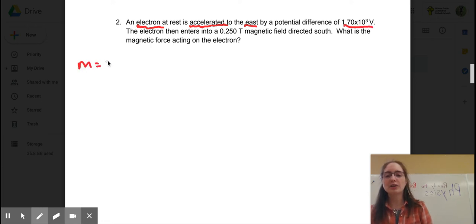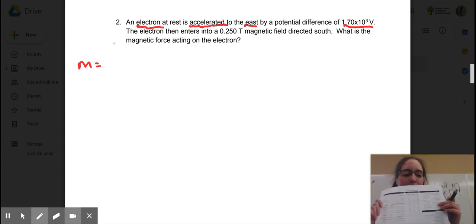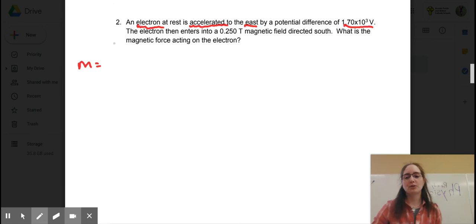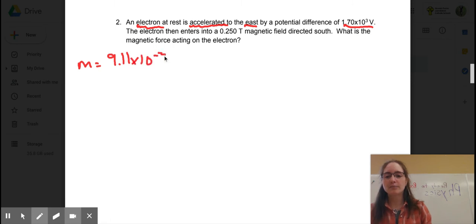All right. So now with an electron that automatically tells us off your data sheet, you are going to have your mass. Now, for those of you who don't remember, here's your data sheet. And you have your mass of your charged particles up here. And you also have your charges of your charged particles here. And you find your elementary charge right over here. So your mass of your electron is 9.11 times 10 to the power of negative 31 kilograms. And your charge of an electron is negative 1.6 times 10 to the power of negative 19 coulombs.